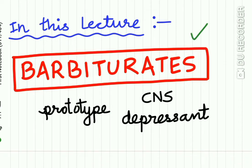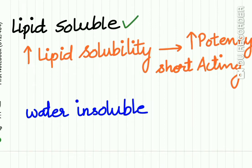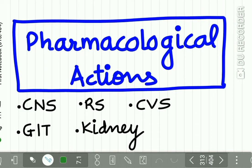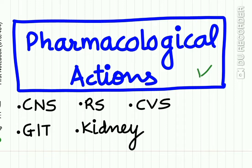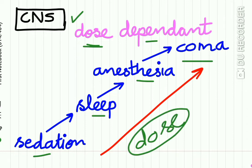In Part 1 of sedatives and hypnotics, we will study barbiturates in detail. Barbiturates are the prototype CNS depressants. They are lipid-soluble — this lipid solubility is very important: greater lipid solubility means greater potency and shorter duration of action. Barbiturates are water-insoluble. The pharmacological actions of barbiturates will be studied on the CNS, respiratory system, CVS, GIT, and kidney. The effect on the CNS is totally dose-dependent; depending on the dose, barbiturates may produce sedation, sleep, anesthesia, or coma.